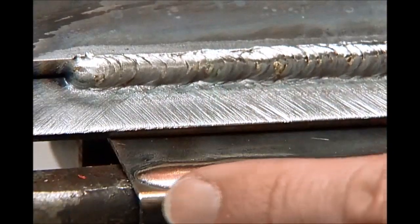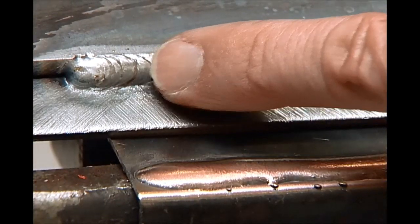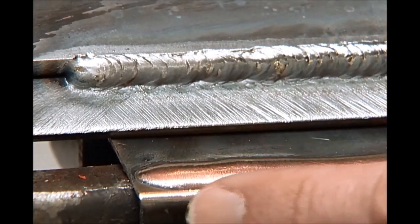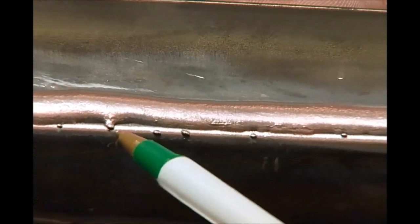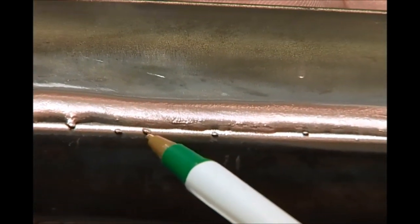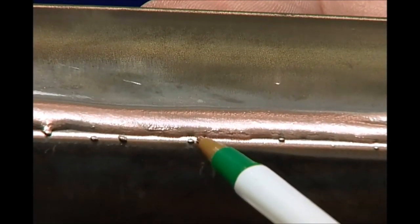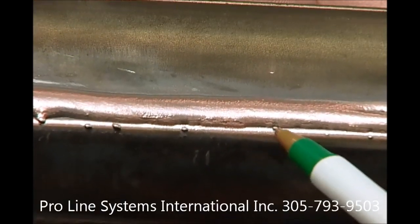A MIG braze weld resembles a MIG steel weld but with a higher build. The reason for this is that the copper wire is only flowing over the top of the surface and not melting into the base material.